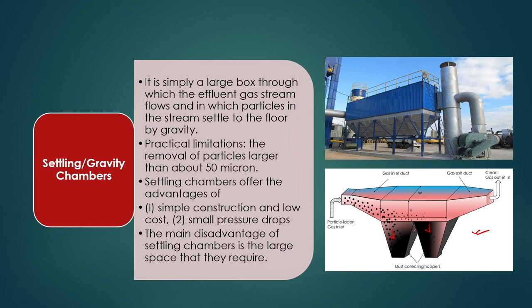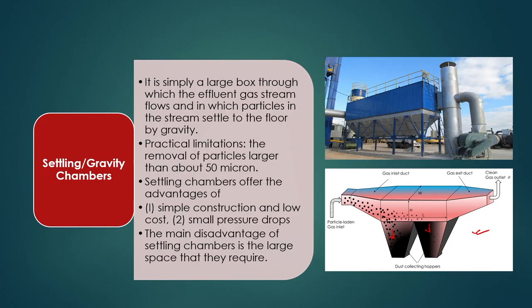Higher particle size gives higher gravity force whereas lower particle size gives lower gravity. Because of lower gravity, finer particles travel further ahead compared to bigger particles and are separated based on this. This gravity chamber is used to segregate particles based on their size — the size gives the gravity force, and based on gravity force differences, particles are separated at different locations.